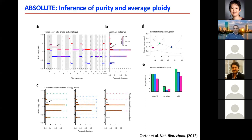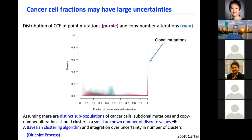Once we estimate the purity and ploidy, we could then estimate the CCF, the cancer cell fraction of every mutation. Most mutations are clonal — this is what we call one — but other mutations are subclonal. Since we have a discrete number of reads supporting the mutations or the copy number changes, we don't know exactly what the CCF is; we have a distribution for every mutation.